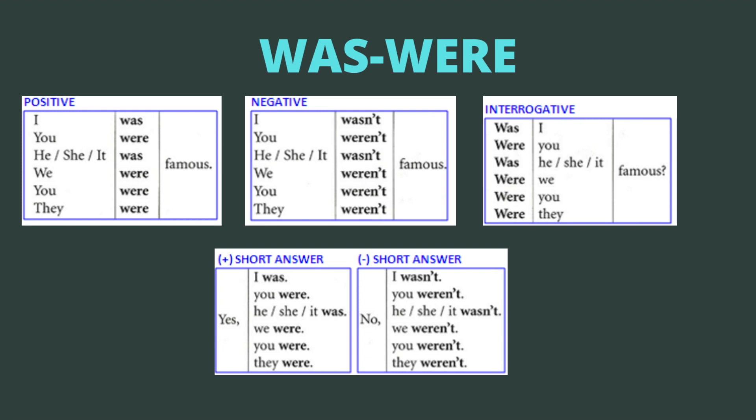Luego tenemos la interrogative form, que es el cambio de posición del verbo to be en tiempo pasado — was o were — seguido del pronombre y luego el adjetivo. Comparemos lo positivo con lo interrogativo: si usted puede ver, dice I was famous — esto es positivo. Pero si yo digo was I famous, entonces es una pregunta. Was I famous? Y el signo de interrogación, que solo existe cerrado.